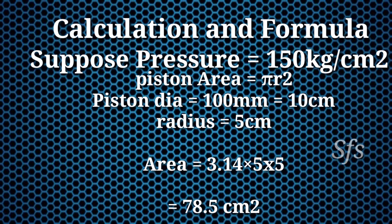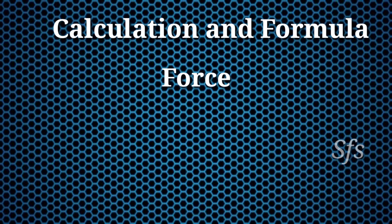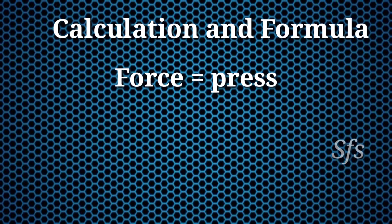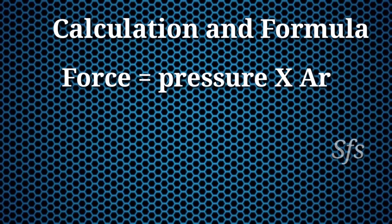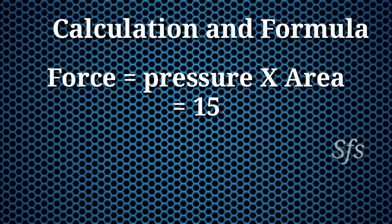The cross-section area of the piston is 78.5 cm squared. We take pressure in kg per centimeter square, so we calculate area in centimeter square. Now we have both values. Now apply the formula: force equals pressure multiply by area.